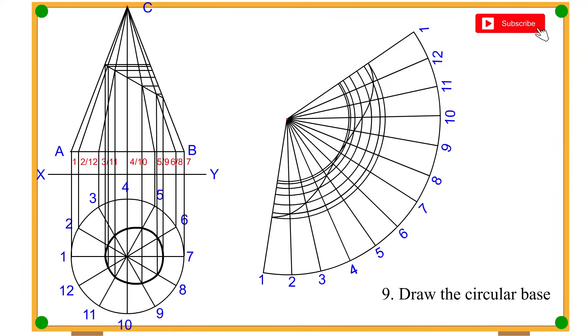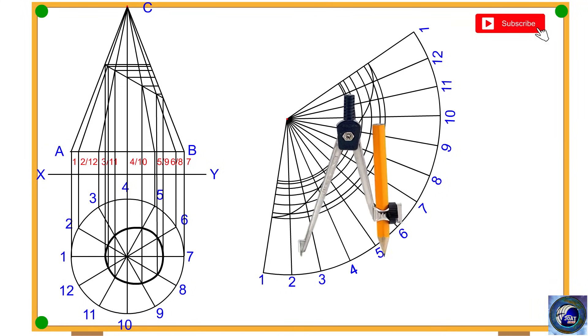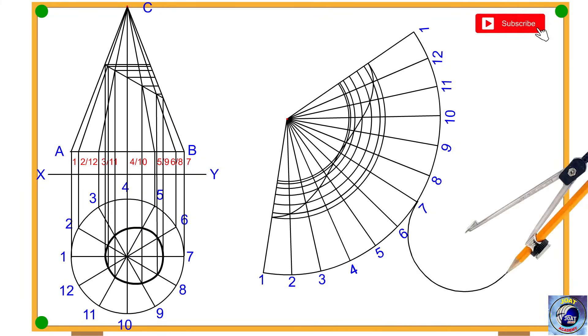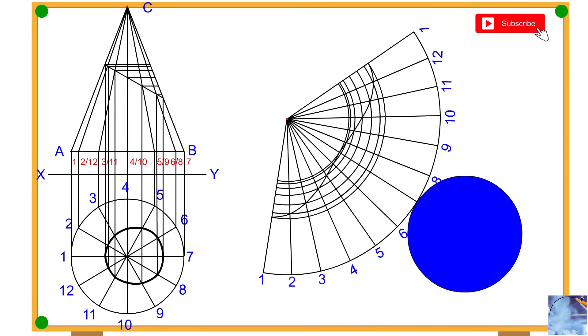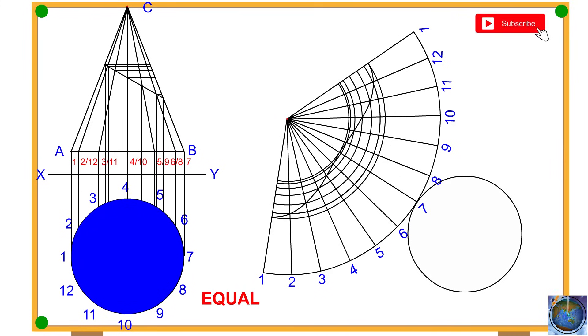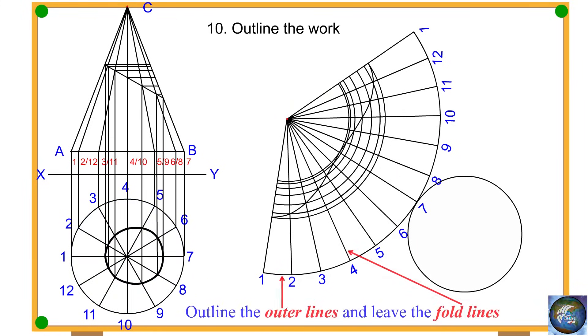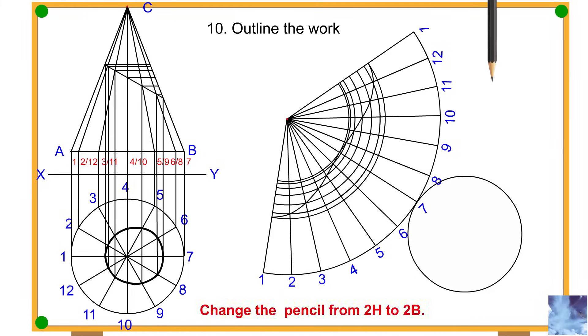Procedure 9: Draw the circular base. Procedure 10: Outline the work. Outline the outer lines and leave the fold lines. Change the pencil from 2H to 2B. This will highlight the actual shape for better visibility.